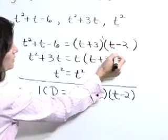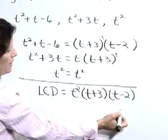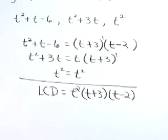We see t plus 3, but notice that each of those is only to the first power. So we include that one time. We include the t minus 2 one time as well.